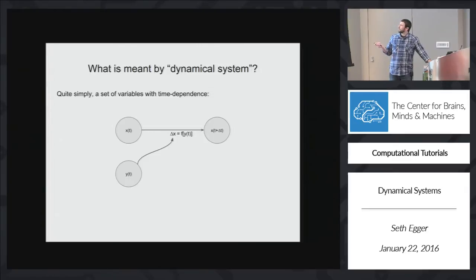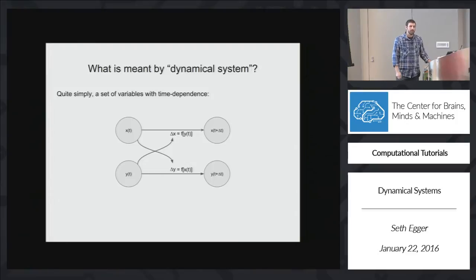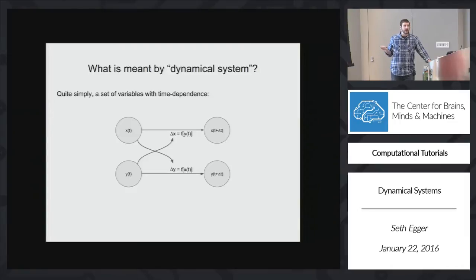So this variable y is controlling how x evolves over time. We could also write the flip of this — x influences y and controls how y evolves over time. So that's all a dynamical system is. We have some variables, they are influenced by each other over time, and we can get out some actually quite complicated behavior.